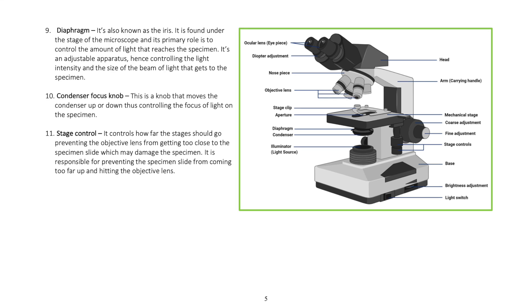The diaphragm, also known as the iris, is found under the stage of the microscope, and its primary role is to control the amount of light that reaches the specimen. It's an adjustable apparatus, hence controlling the light intensity and the size of the beam of light that gets to the specimen.